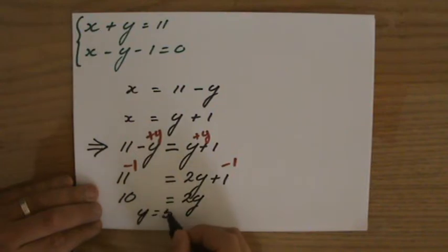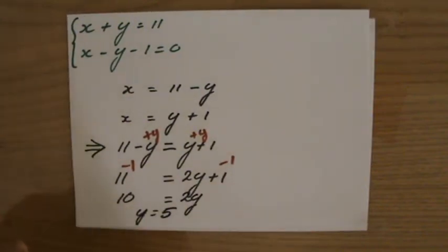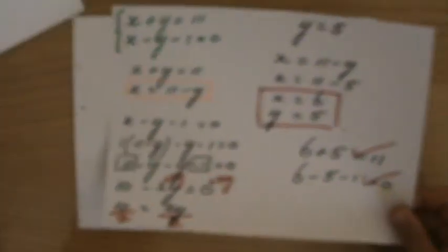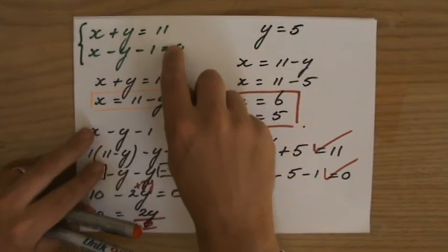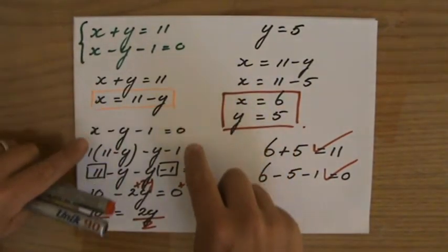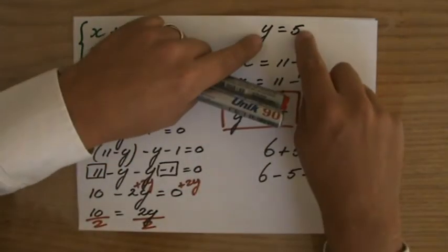Okay, now I'd just like to go back to my workings of the previous video. So the same question. Okay, I made x the subject, and then I substituted that in the other equation. And then I also got y is 5.